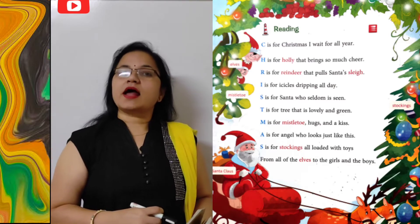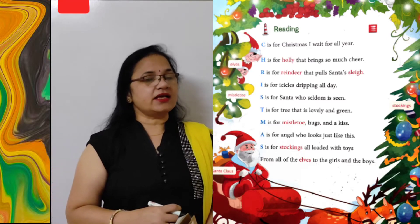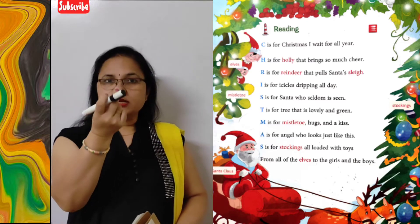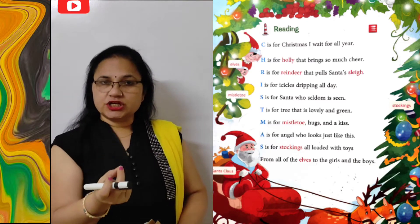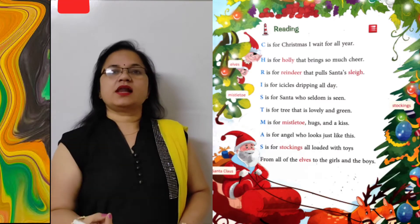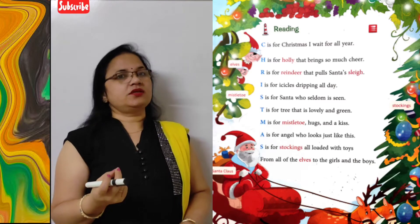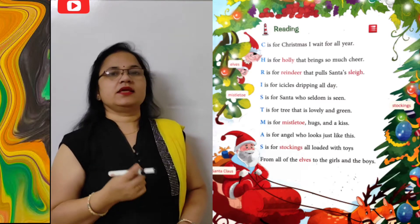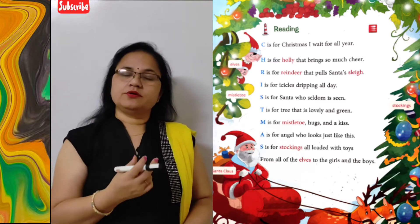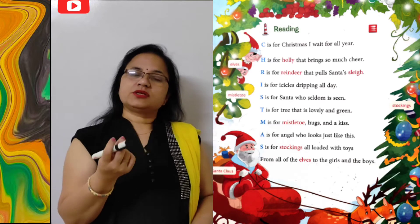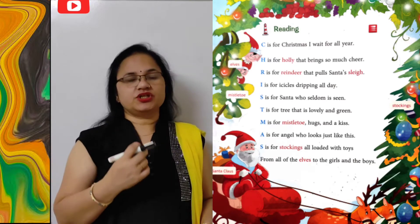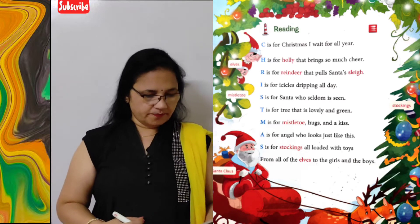I is for icicles dripping all day. Icicles kehte hain — jab baraf padti hai to paani ki neeche girne wali boondein jam jaati hain aur baraf ki ek line si ban jaati hai. Use kehte hain icicles. Kyunki us waqt bahut thand hoti hai, sab ke gharon ke baahir icicles poore din jami rehti hain.